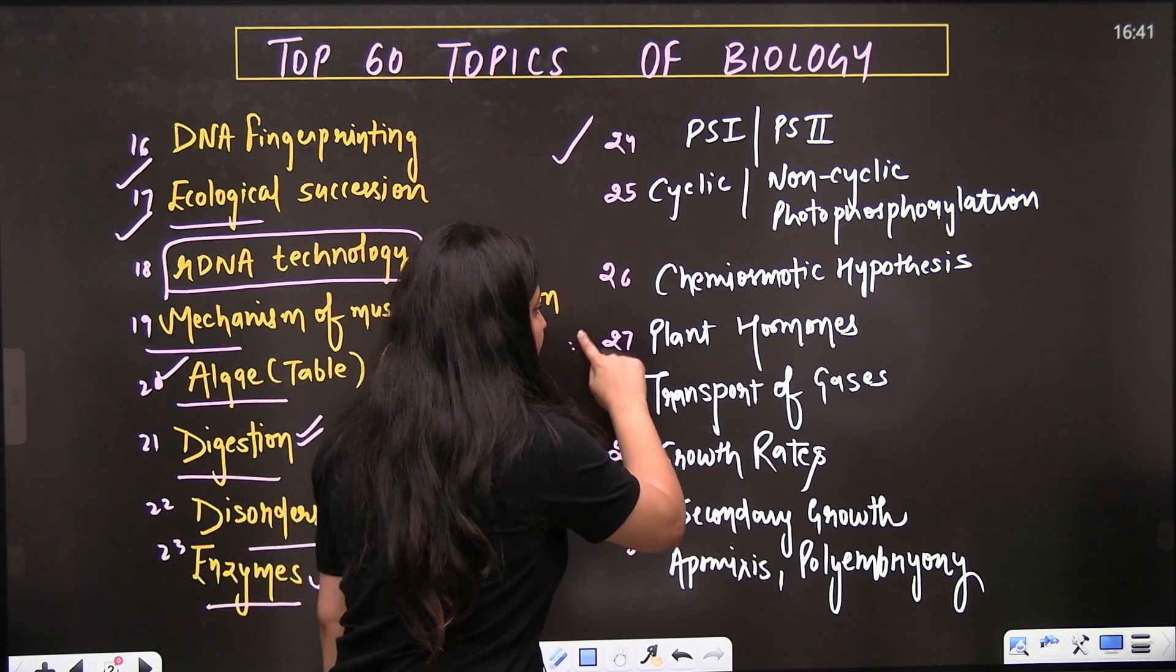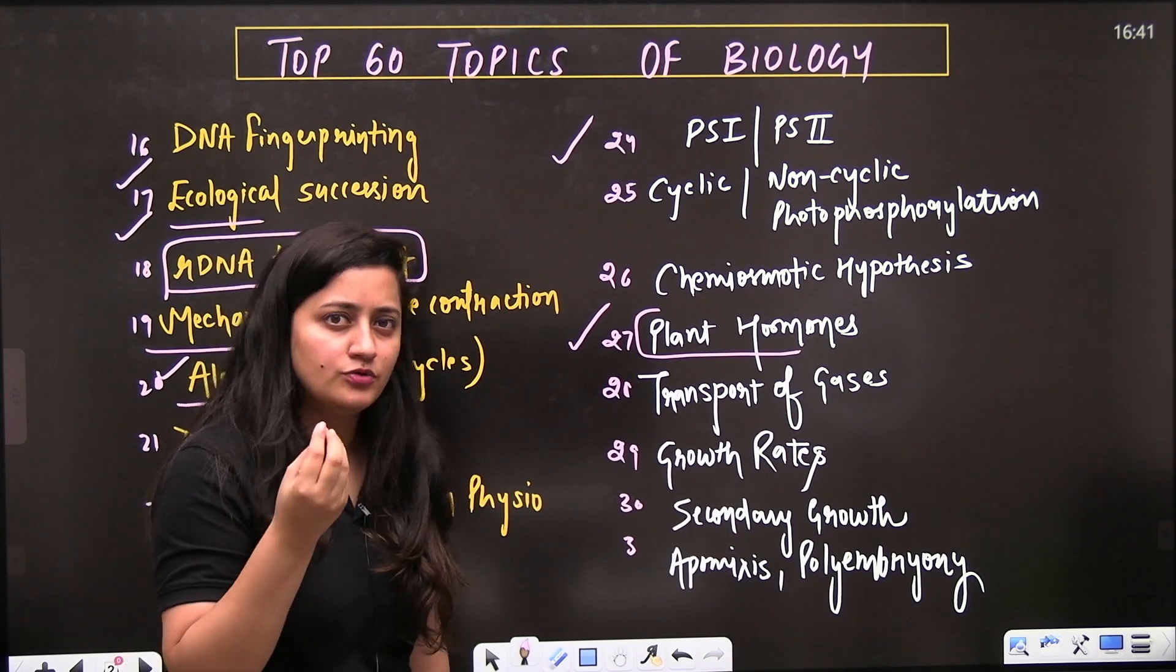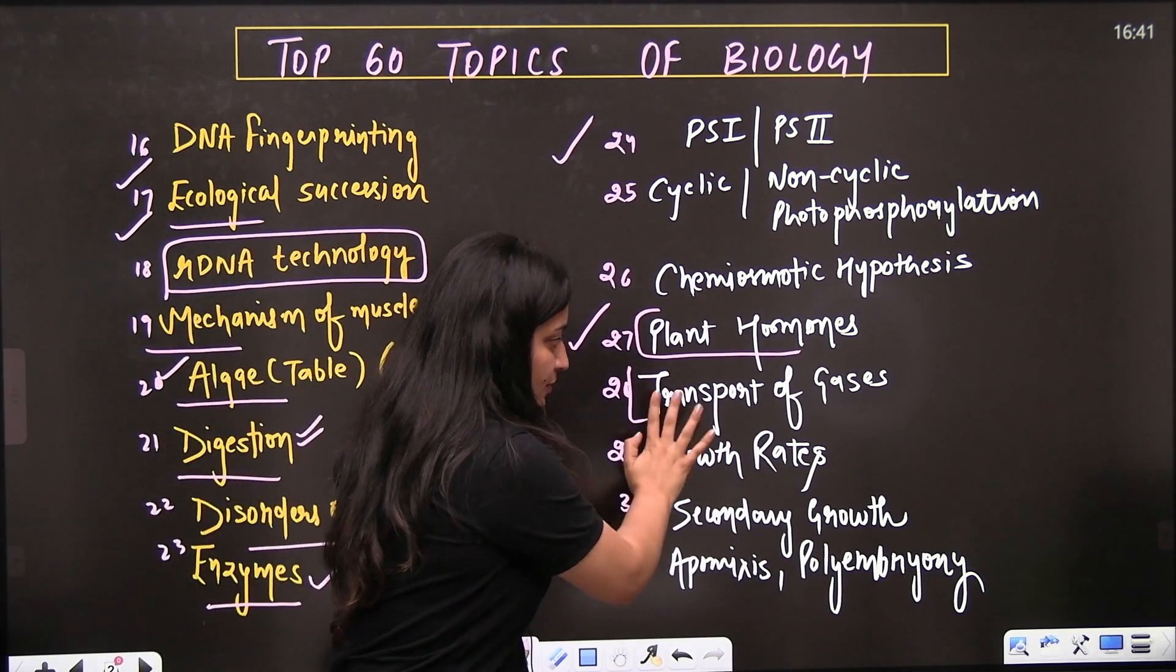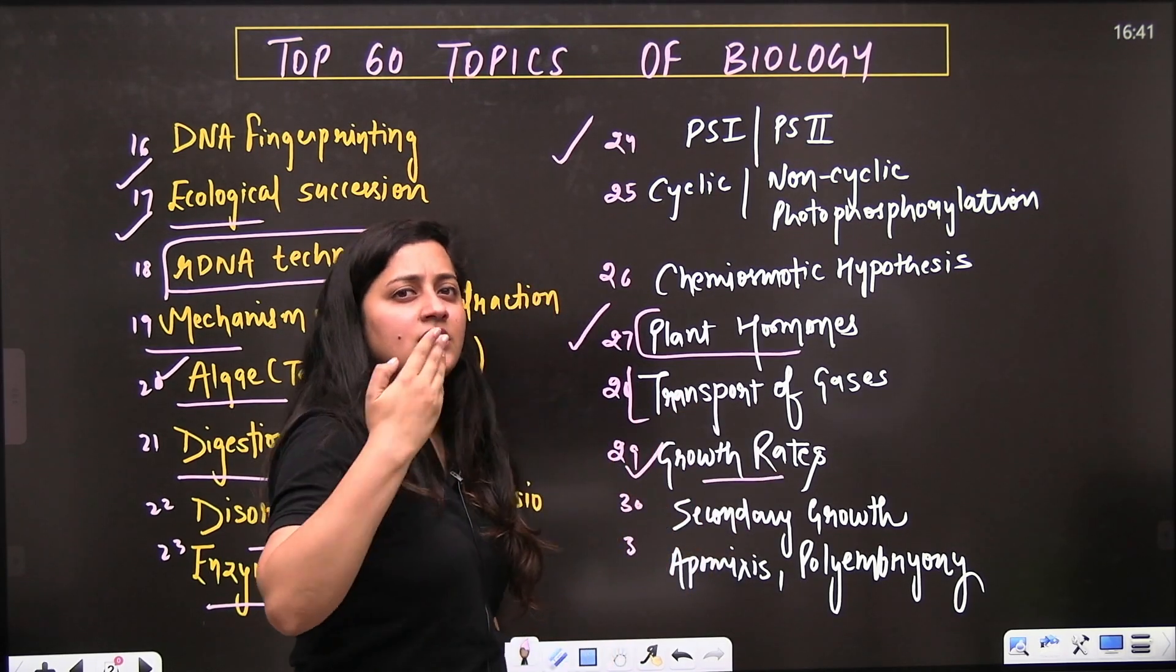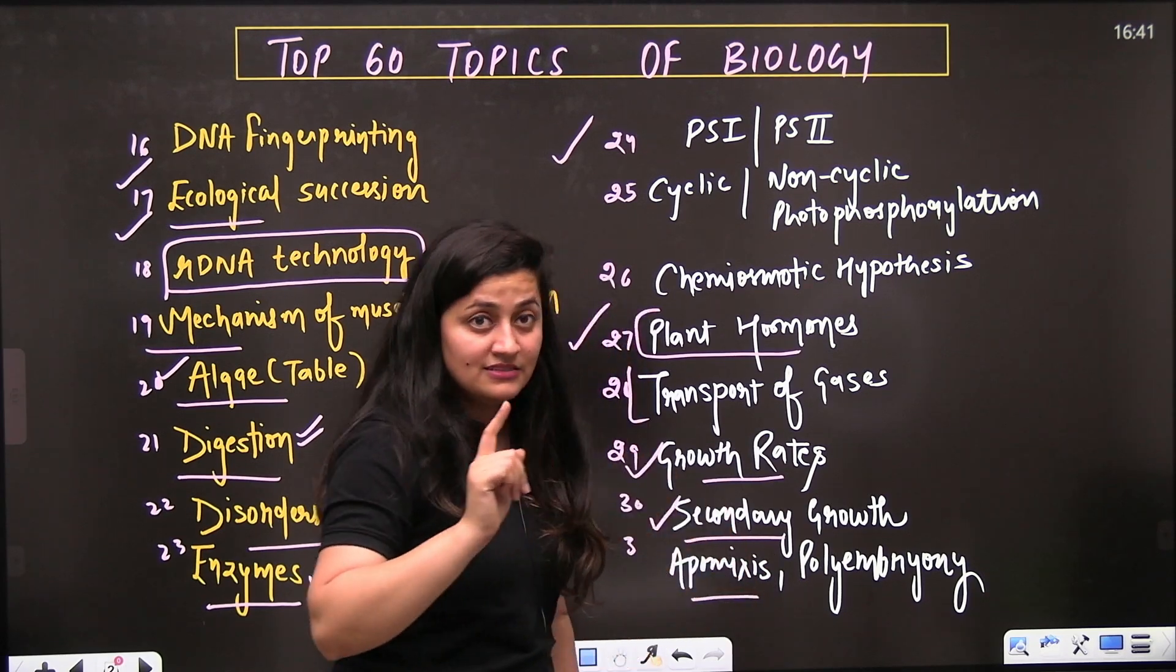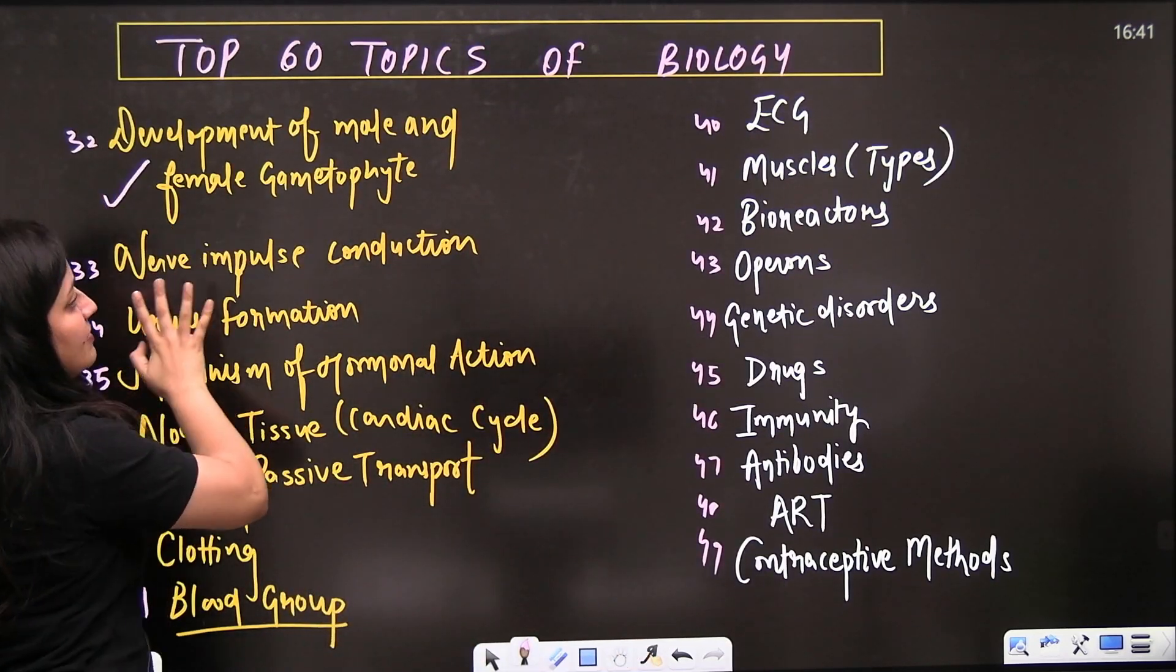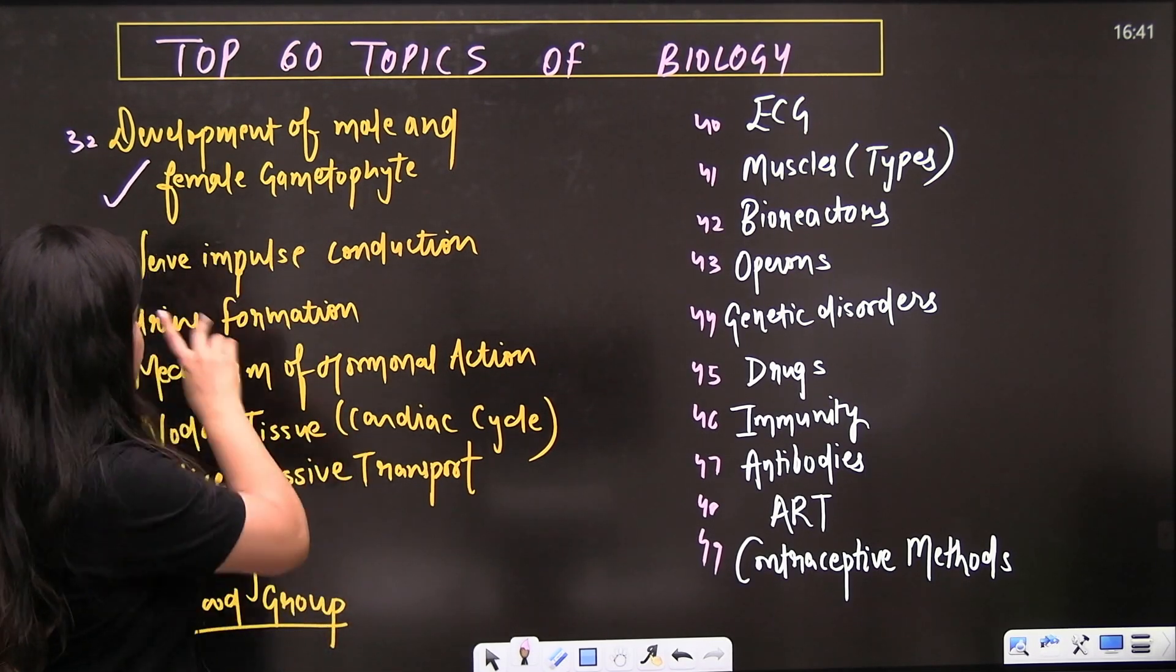Then comes the plant hormones - definitely a question will come from plant hormones, auxins, and gibberellin. Then transport of gases from human physiology, growth rate in the case of plants - arithmetic, geometric. Then secondary growth from anatomy of flowering plants. From sexual reproduction in flowering plants, apomixis, polyembryony, along with development of male and female gametophyte is very important. You should not leave these topics.